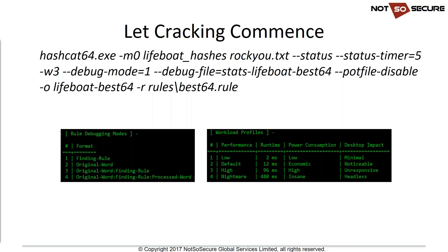The dash-w3 workload profile allocates more resources to hashcat at the cost of desktop responsiveness — good for dedicated sessions. The debug mode parameters record which rule cracked each password, outputting to a stats file for later analysis. Importantly, --potfile-disable treats each session as fresh so results aren't skewed by previously cracked hashes. Each test I replaced the rule name in the command to keep statistics separate.